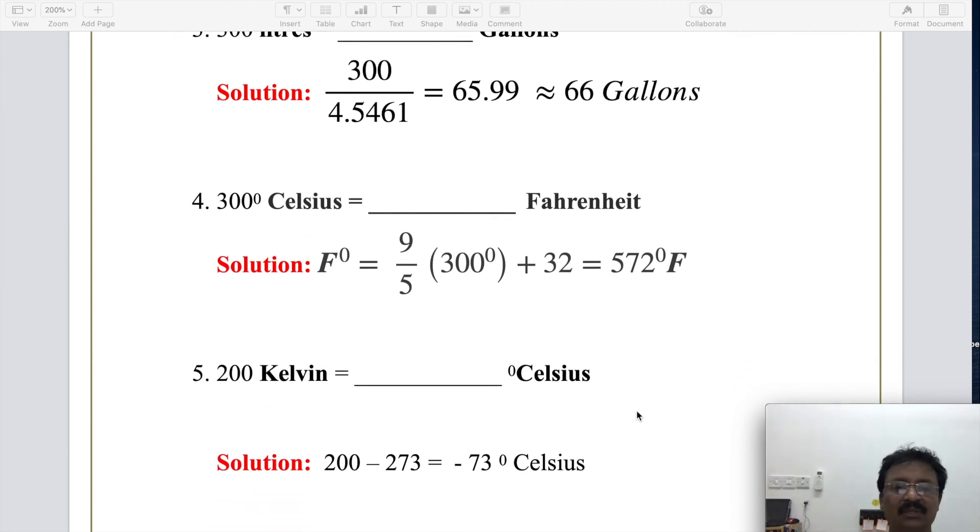Now the last one is 200 degrees Kelvin, how to convert it into Celsius? 200 minus 273 degrees Celsius. So 200 minus 273 which equals negative 73 degrees Celsius. 200 Kelvin is negative 73 degrees Celsius.